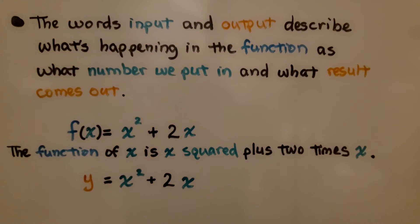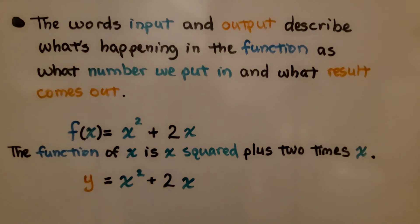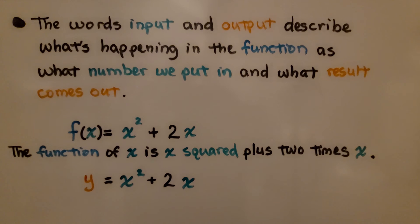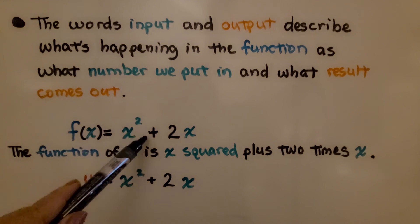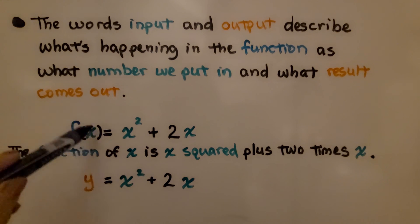The words input and output describe what's happening in the function as what number we put in, and what result comes out. This would be read as the function of x, or the f of x, is x squared plus 2x. It's like saying y is equal to x squared plus 2x. This takes the place of y. It's the output.